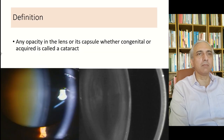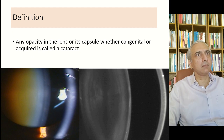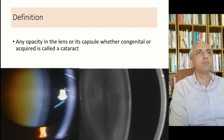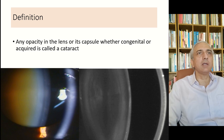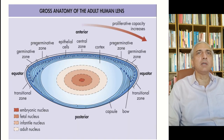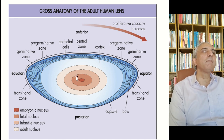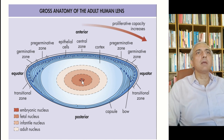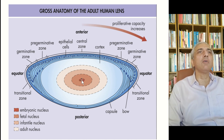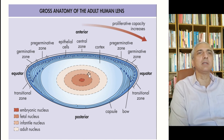Classification of cataract starts with the definition: a cataract is any opacity in the lens or its capsule, whether congenital or acquired. Looking at the anatomy of the lens, it starts off with an embryonic nucleus.